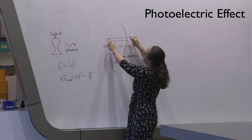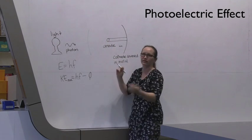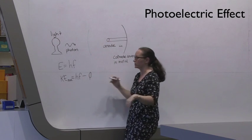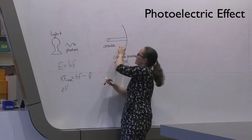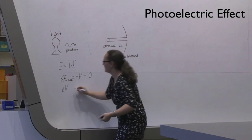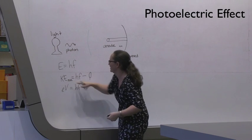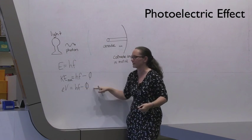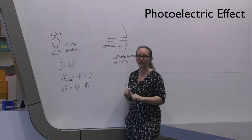And so the energy difference between the anode and the cathode with a backing voltage supplied is given by EV. This is the energy difference that this electron needs to travel from here to here. And so when that is equal to Ke max, which is HF minus phi, that is when you're going to cease getting your photocurrent.